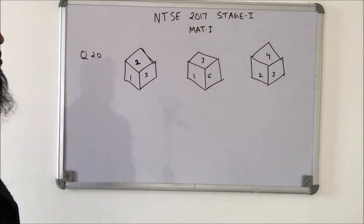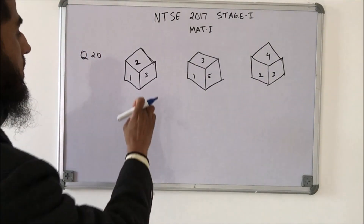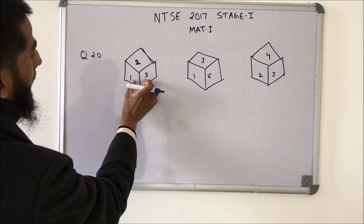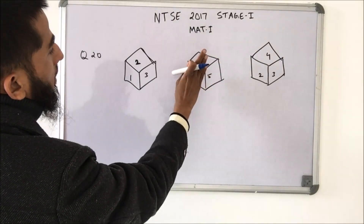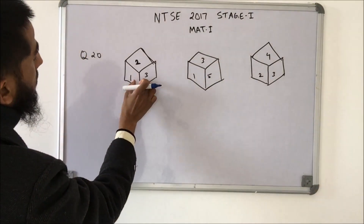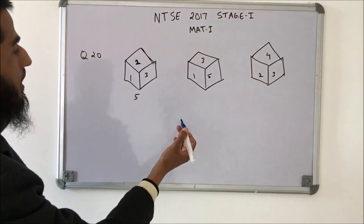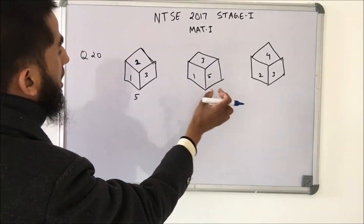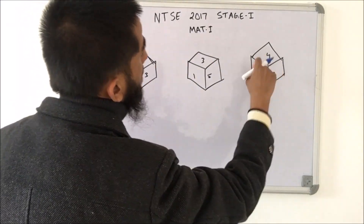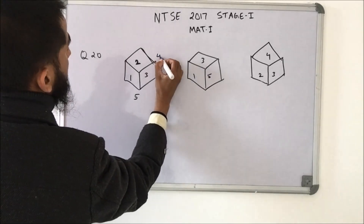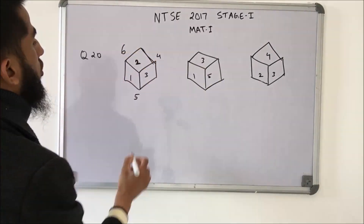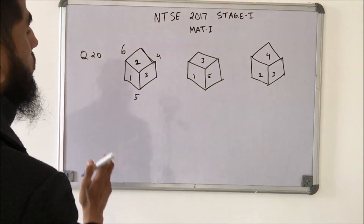For this dice problem we need to find the number opposite to 3. We have 1 and 3 appearing together in two positions; on that combination the number on the other side is 5, so 5 is opposite 3? Let's check: we also have 2 and 3 together and on that combination we have 4. So working through all combinations — with 2, 3, 4, 5 accounted for — what we are left with is 6. So the number opposite to 3 is 6.